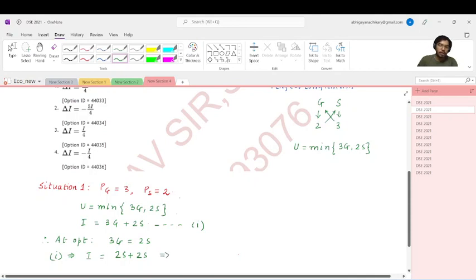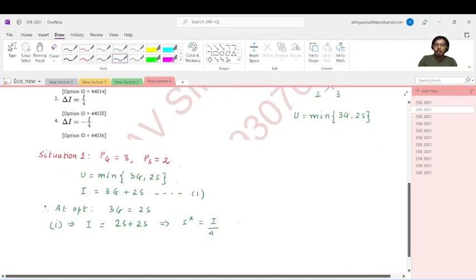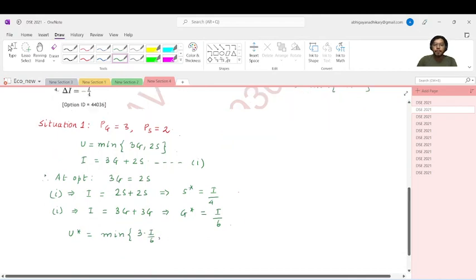Now the question is in situation 2. In situation 2, the price of grapes remains the same but the price of strawberries increases. Prices of strawberries increase to 3. So price of grapes continues to be 3 and the price of strawberries increases to 3. So my new income is i plus delta i equals 3 times G plus 3 times S. And the utility function continues to be minimum of 3 times G comma 2 times S.